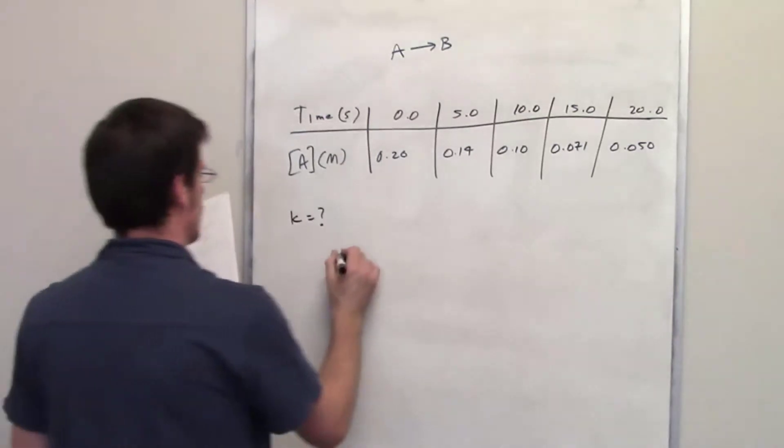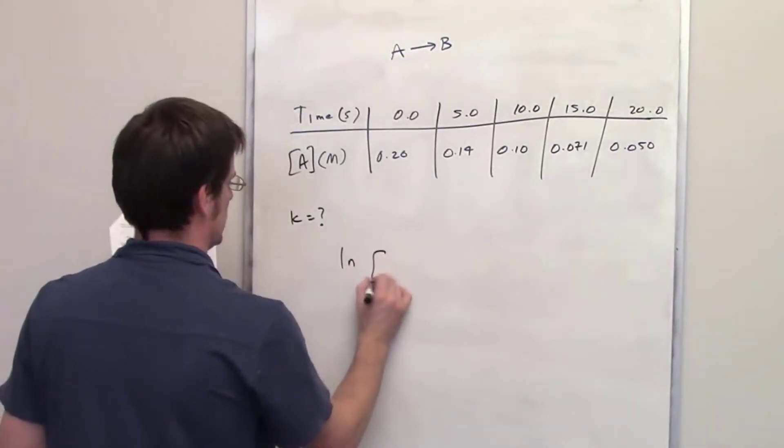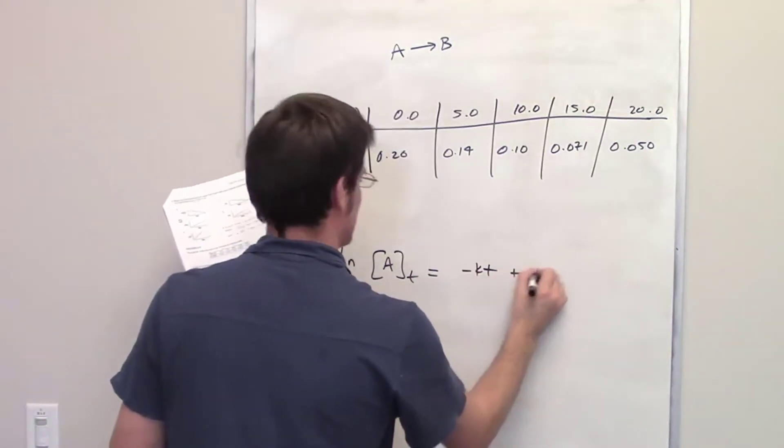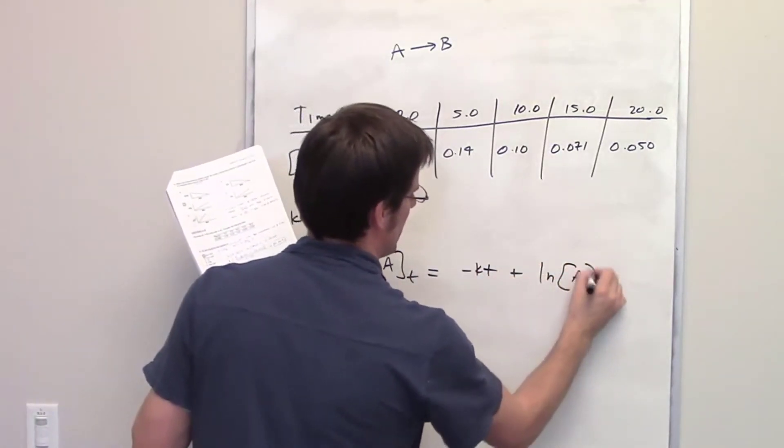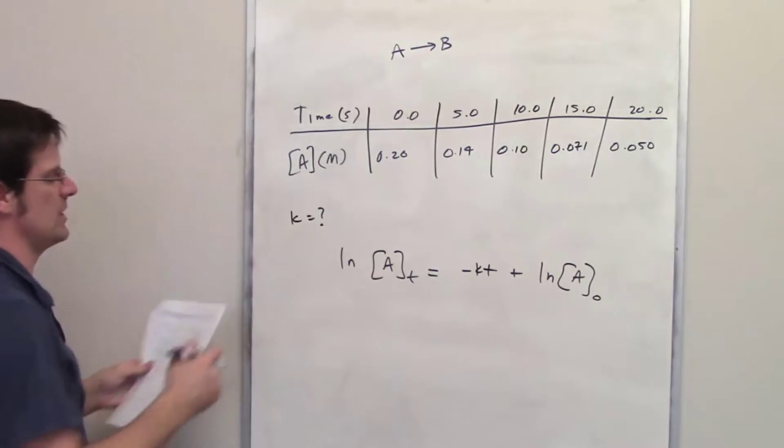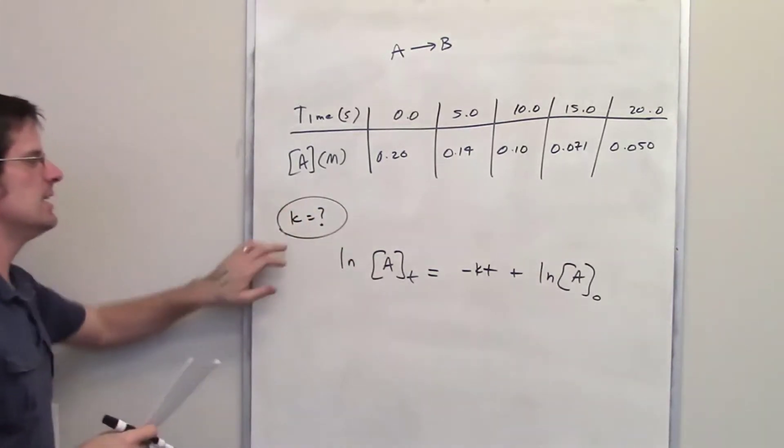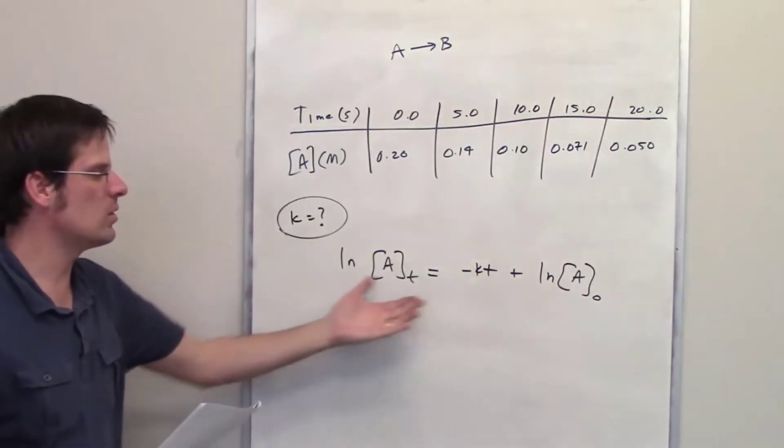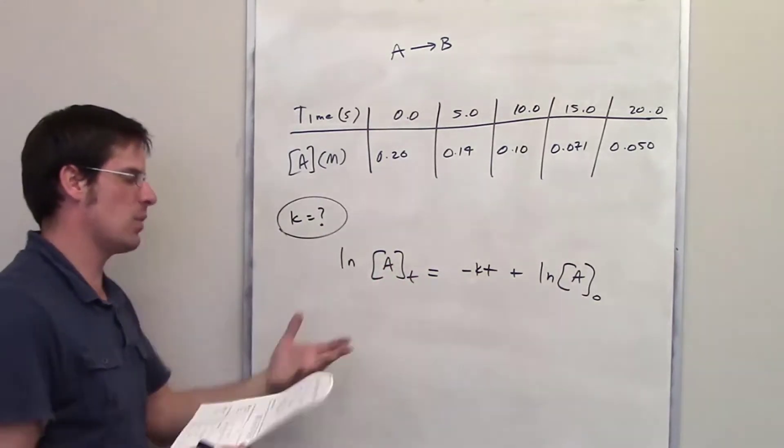which means that the integrated rate law for a first order reaction is this. See, I don't have it memorized either, and I don't expect you to memorize it. It then asks us to determine what k is. So here's k. That I don't know. What in the world is it? And how do I figure that out?